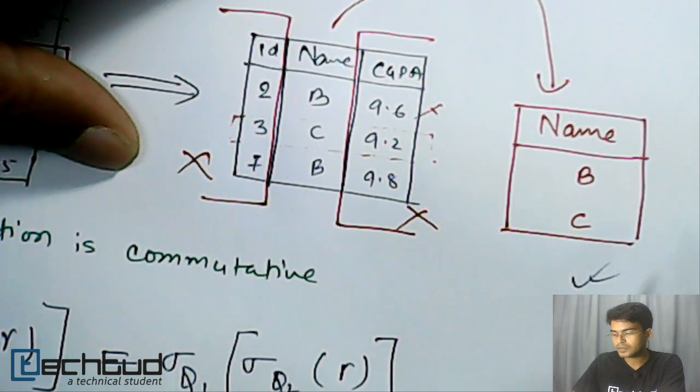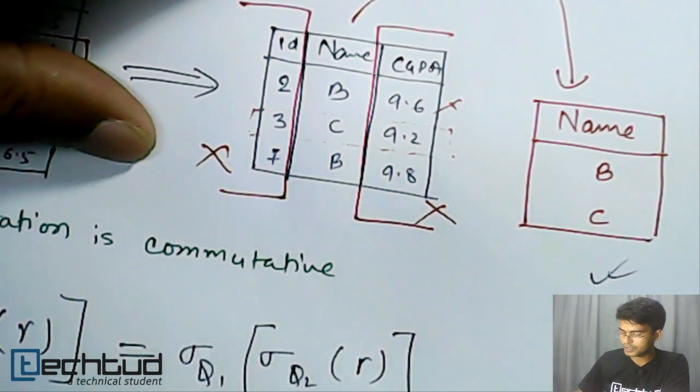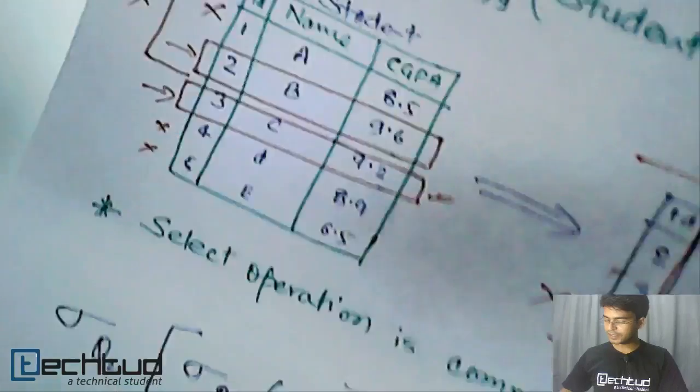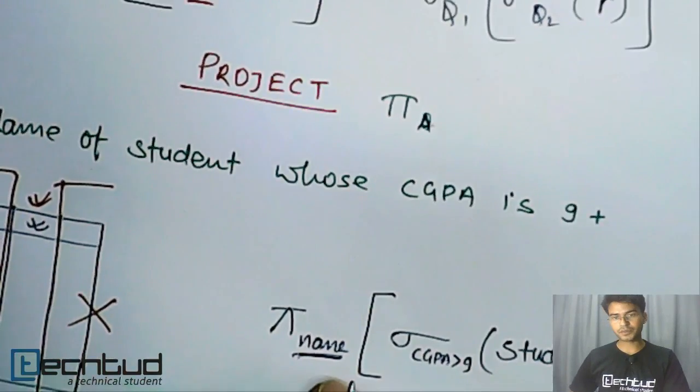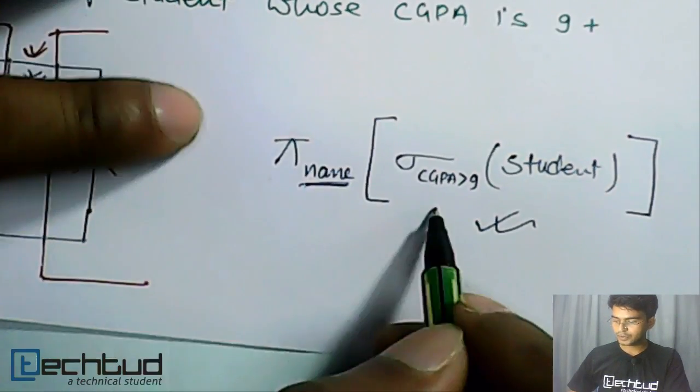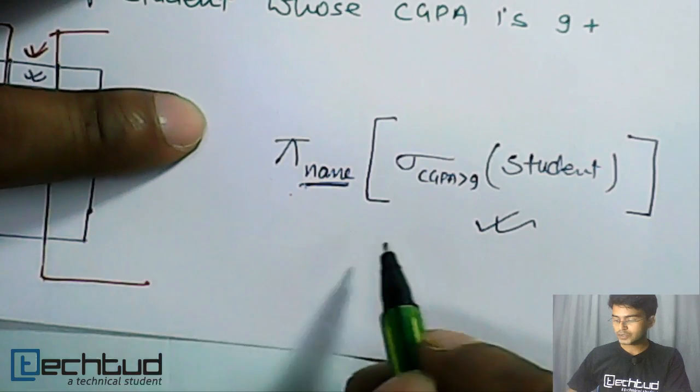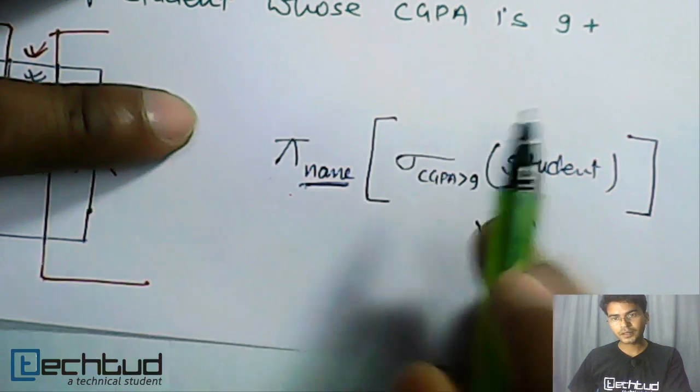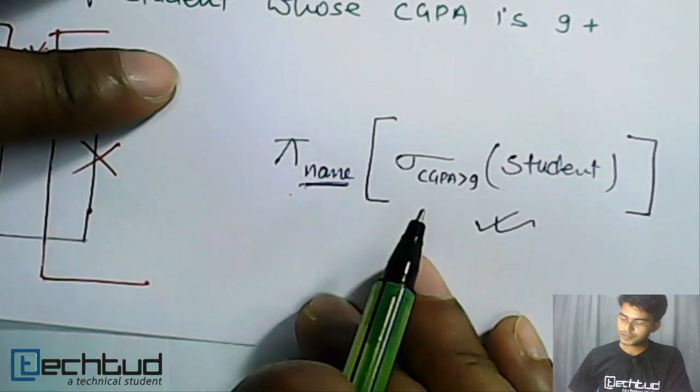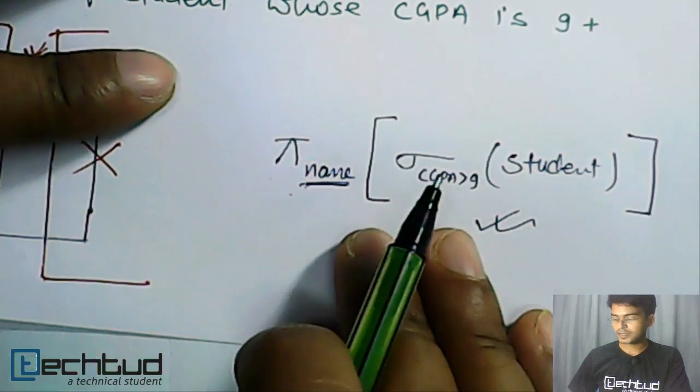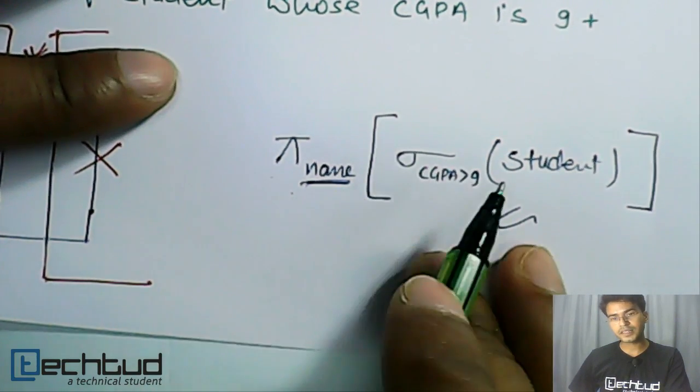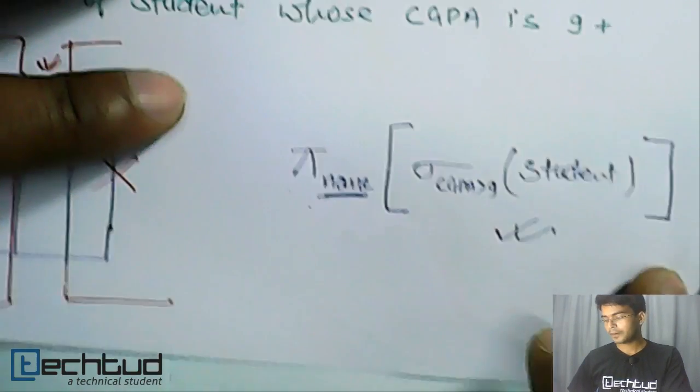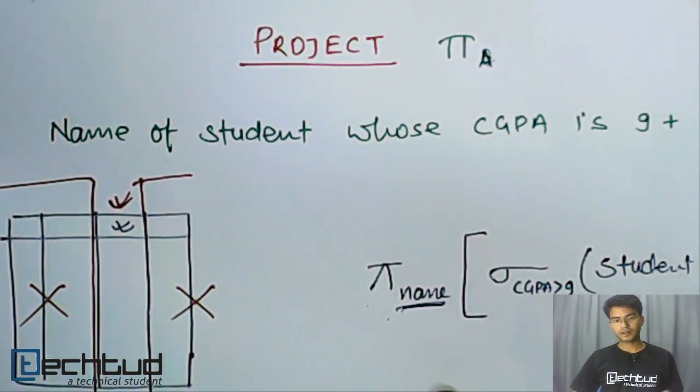So this is what we do in project. Now we can also commutatively write this select and project operation. We can interchange - we can first project and then select. So this will give us the same result in this case also. When we have this select and project only, then we can write it commutatively. So I hope this is clear.